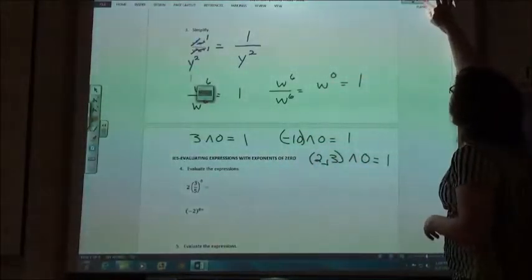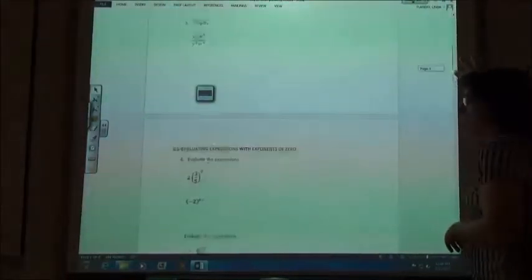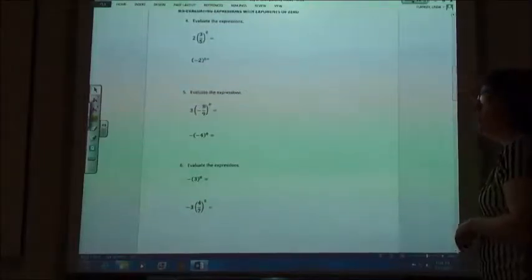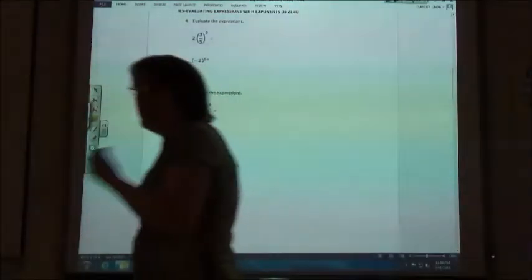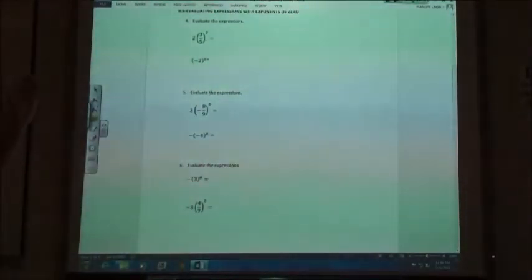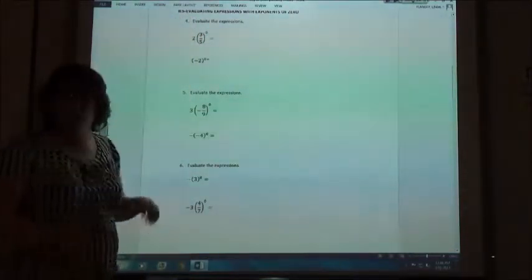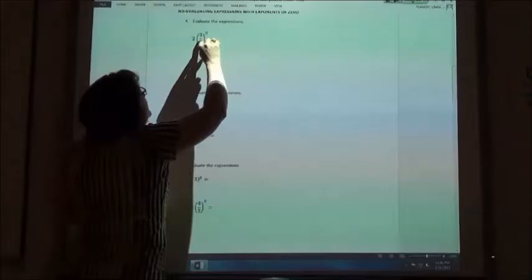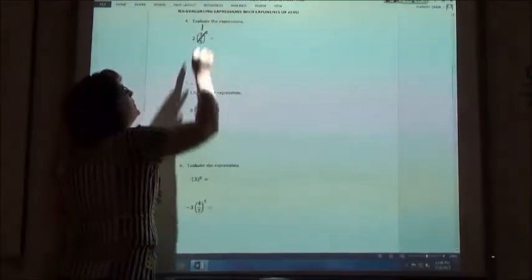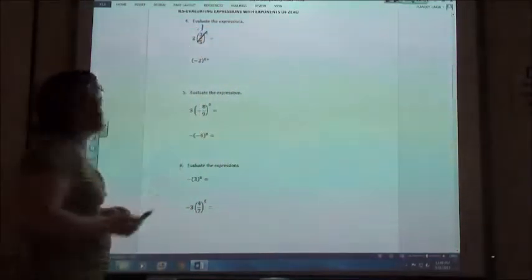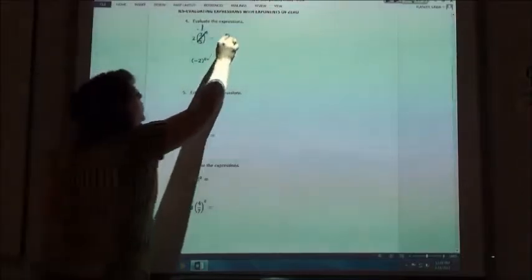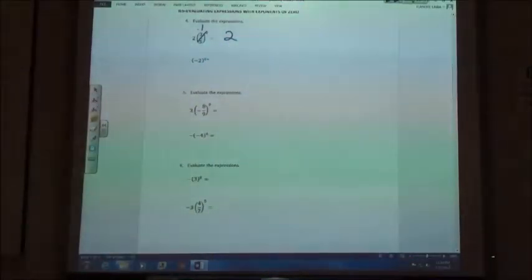We are now going to evaluate some things that have 2 to the 0 power in them. So when we follow our order of operations, we have to do the exponent first. If I do 3 fifths to the 0 power, 3 fifths to the 0 power is 1. So now I have 2 times 1. 2 times 1 is just going to give me 2 then.